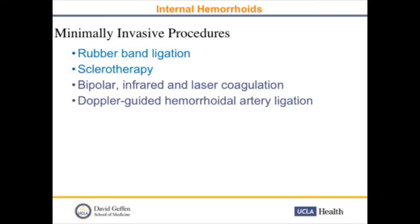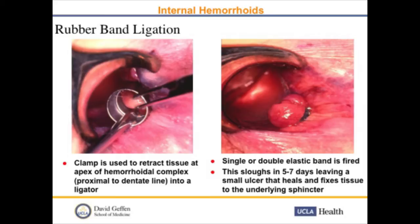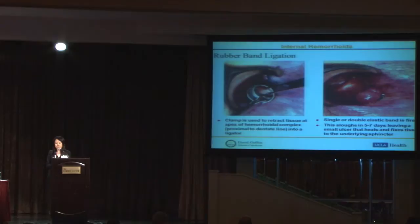Let's talk about minimally invasive procedures. I'm going to focus on rubber band ligation and sclerotherapy, though other procedures are available including coagulation and Doppler-guided hemorrhoidal artery ligation. Rubber band ligation was started in the 1960s. It's appropriate for grades one, two, and three internal hemorrhoids. We identify the hemorrhoid through the anoscope, a clamp retracts the tissue at the apex of the hemorrhoidal complex, proximal to the dentate line, and a single or double elastic band is fired. The tissue sloughs off in about five to seven days, leaving a small ulcer which heals and fixes the tissue to the underlying sphincter.